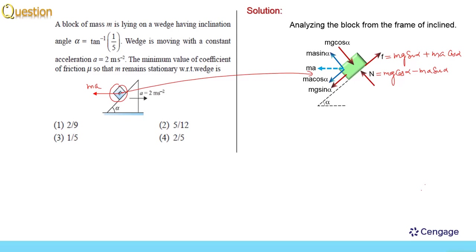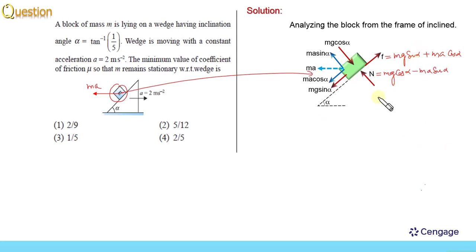Now we can take m as common, so we can write the friction force f equal to m times (g·sin α plus a·cos α). This is the value of the friction force.